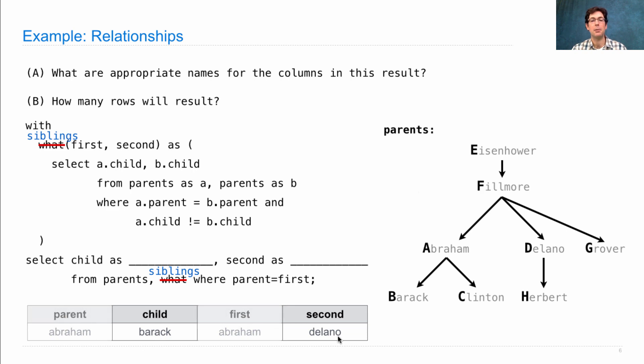That's a nephew to uncle relationship, where what you're joining together here is a child and the sibling of the parent. So how many nephew-uncle pairs are there? Well, Barack and Delano, Barack and Grover, Clinton and Delano, Clinton and Grover, Herbert and Abraham, and Herbert and Grover. Six of them. That's how many rows will result.